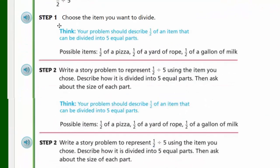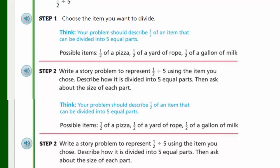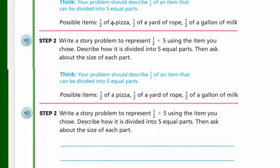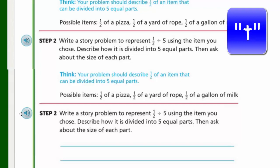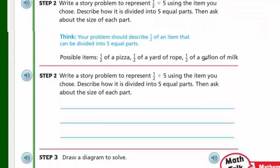Write a story problem, then draw a diagram to solve, for Example 3. So one half divided by five. Now choose the item you want to divide. Think, your problem should describe one half of an item that can be divided into five equal parts. Okay, half, half of a pizza, yeah, right, I would eat that whole half, sorry, I can't divide that for five people. Half of a yard of rope, a half of a gallon of milk. Write a story problem to represent one half divided by five using the item you chose. Describe how it is divided into five equal parts, then ask about the size of each part. I say that that way because it seems like this is repeating a lot. Okay, same items, write a story problem to represent a half divided by five using the item you chose. This is the same, describe how it is divided into five equal parts, then ask about the size of each part.